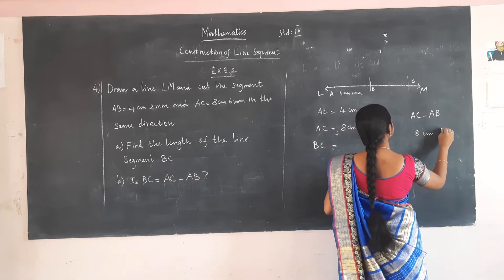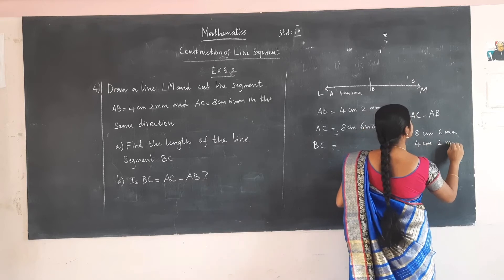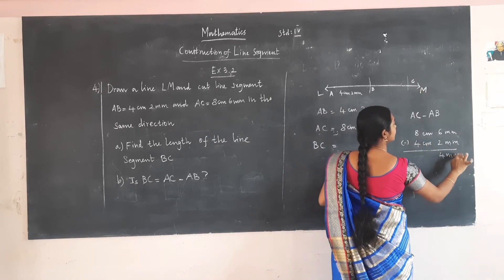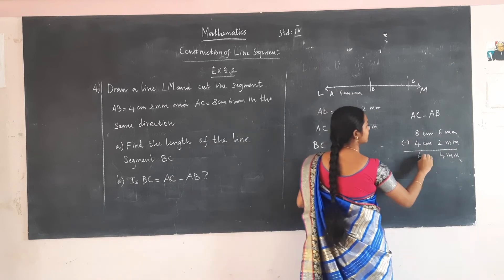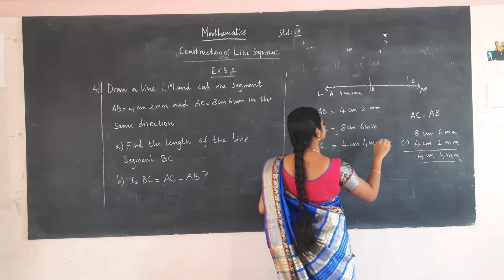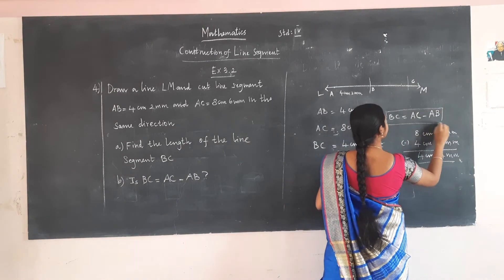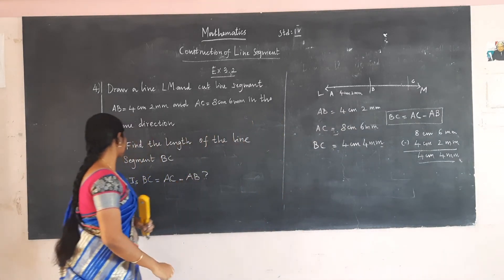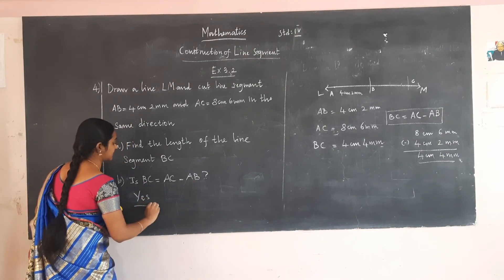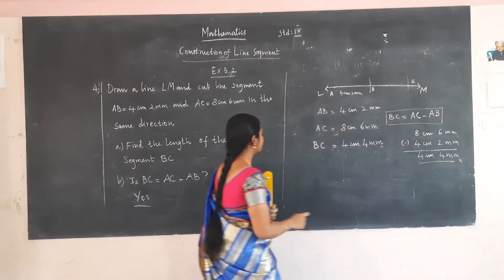8 cm 6 mm minus 4 cm 2 mm: 6 minus 2 is 4, 8 minus 4 is 4. So BC is 4 cm 4 mm. Is BC equal to AC minus AB? Yes, because only by subtracting AB from AC we have got BC. So this is correct.